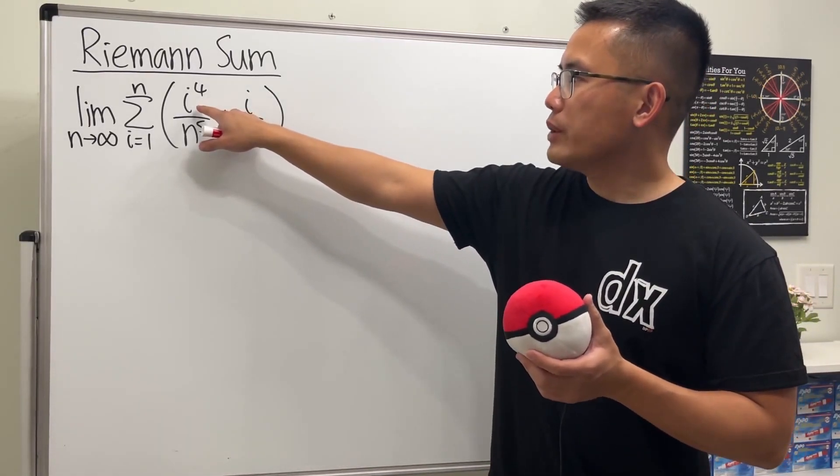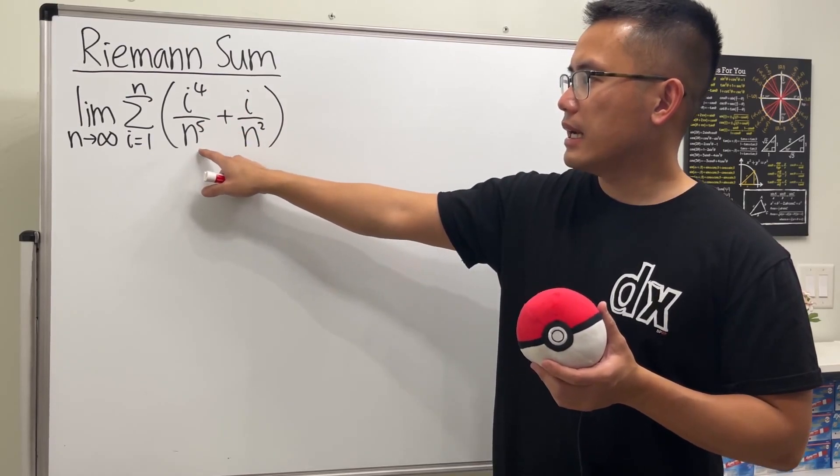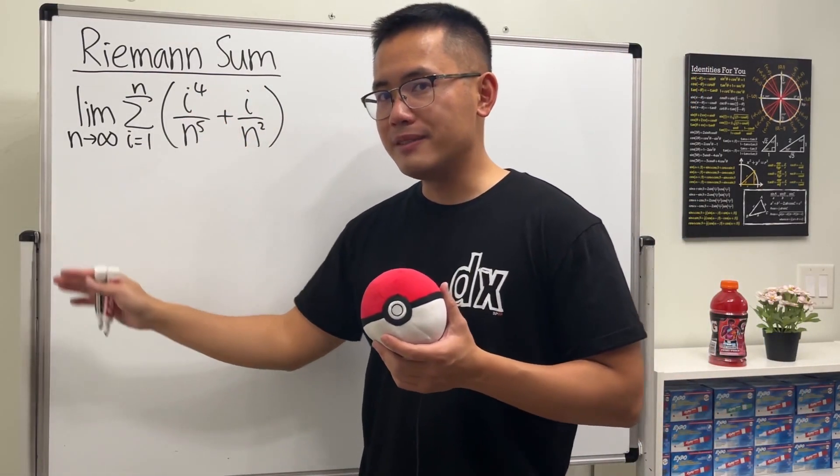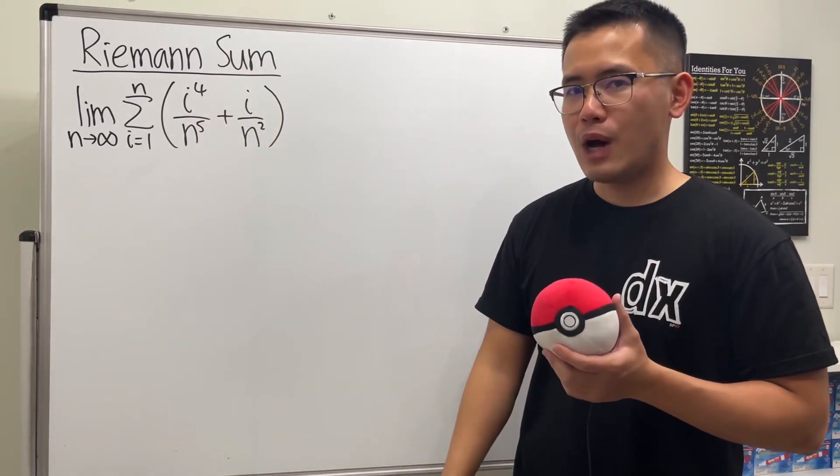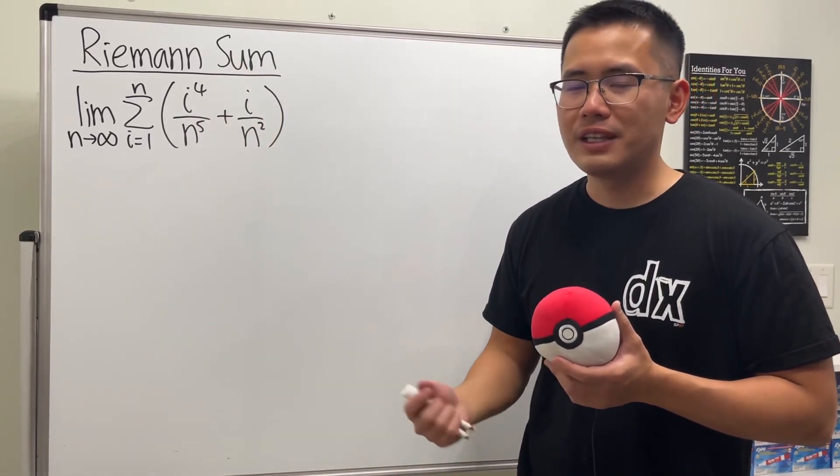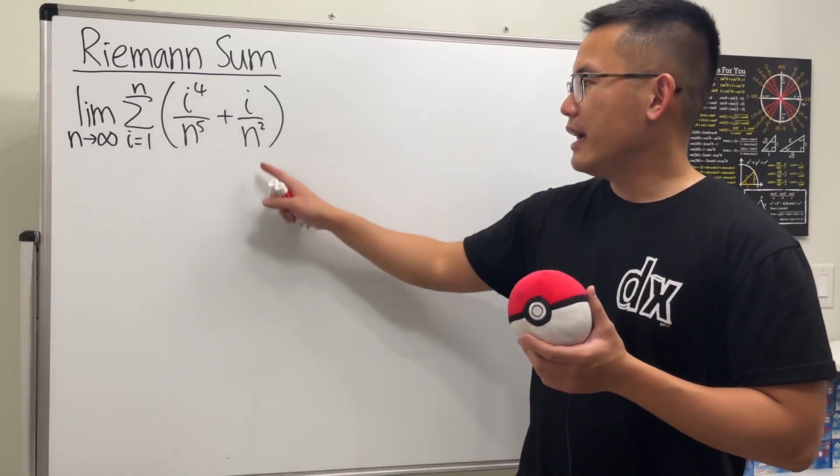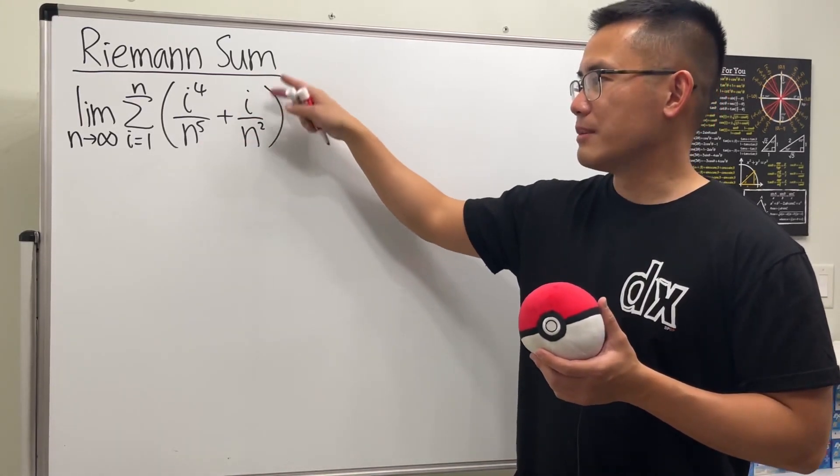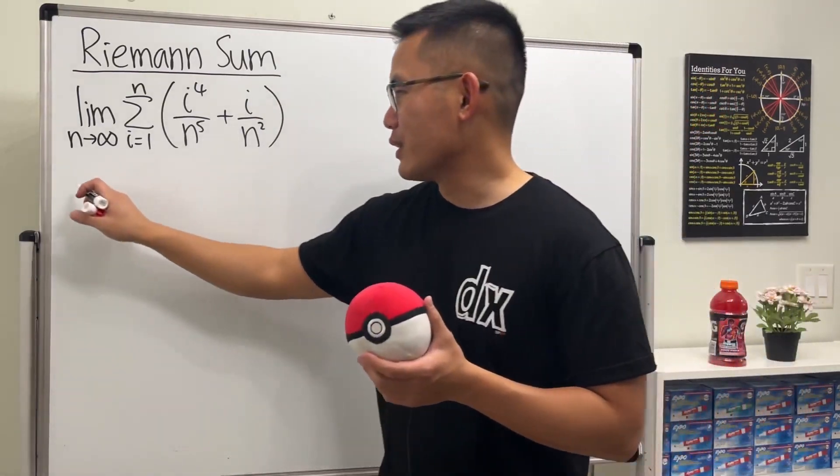Here's the deal: we see that we have i to the fourth and this is n to the fifth. If we factor out n to the first on the bottom, they will have the same power and we'll know that the function is x to the fourth. And it's very convenient right here if we factor out n to the first, we will have the same power right here as well. So let's go ahead and just get to work.